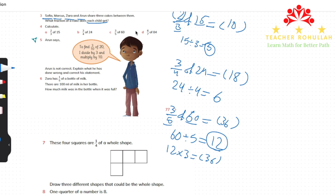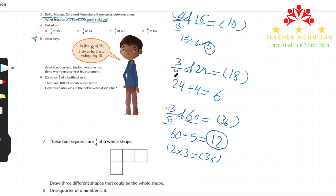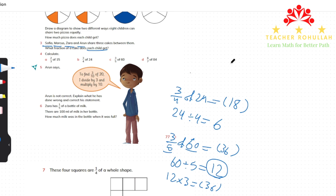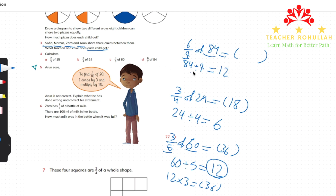Part d shows six-sevenths of 84. This means 84 is divided into 7 equal pieces and the answer is 6 of those pieces. We divide 84 by 7 which equals 12, because 10 times 7 is 70, 11 times 7 is 77, and 12 times 7 is 84.